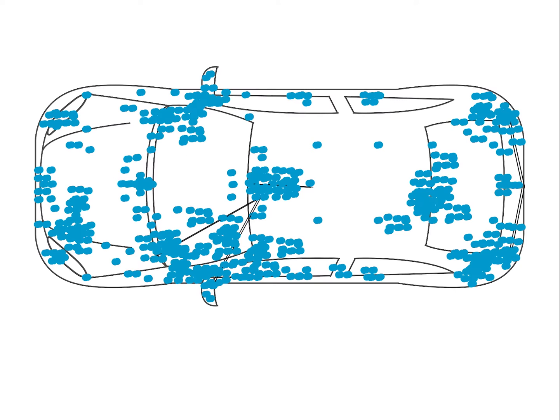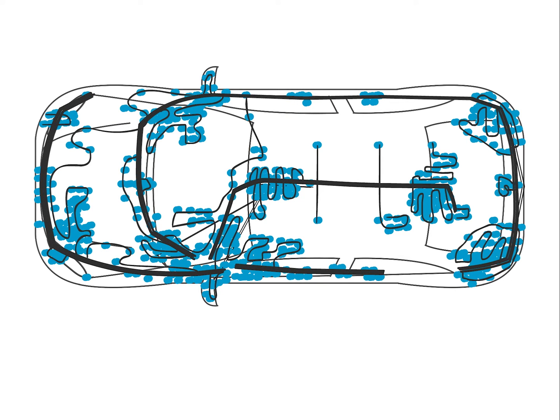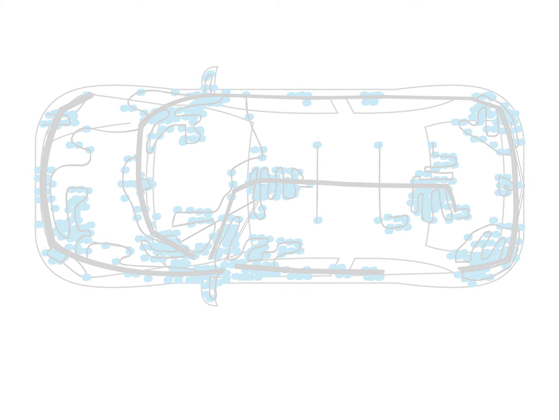This is where in-vehicle networking, IVN, technologies come into play. They allow many ECUs to share the same wiring for their communication needs in a coordinated manner. This saves cables, space, weight, and allows developing the modern cars that we are used to.